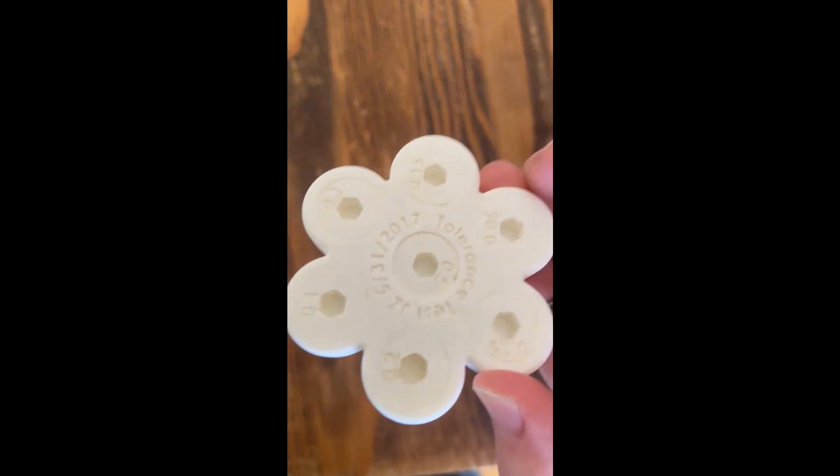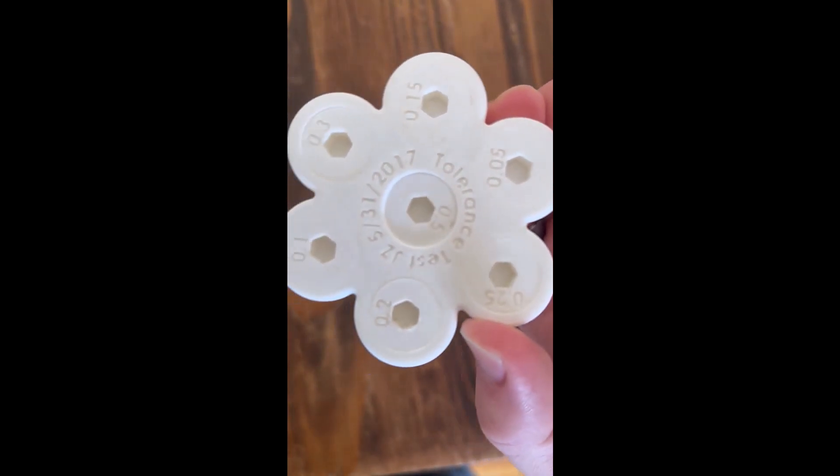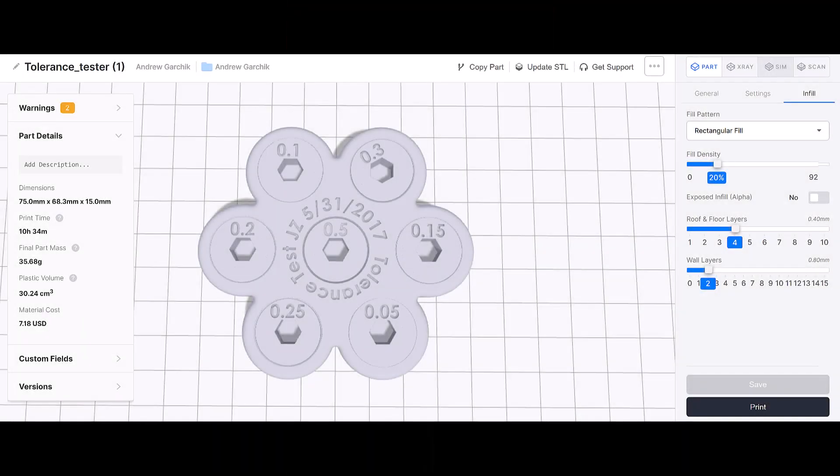Using this 0.2 millimeter as a fit tolerance will ensure that I have a snug fit and nothing will move around. Again, all printers will have different fit tolerances. For a snug fit, my printer needs a 0.2 millimeter fit tolerance. This is why it's important to test your printer to see what fit tolerance works for you.